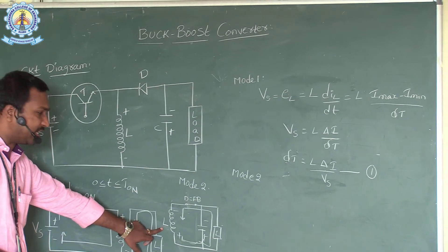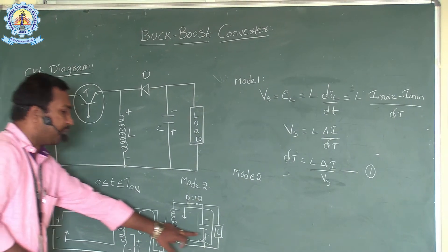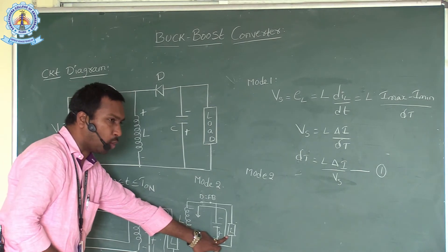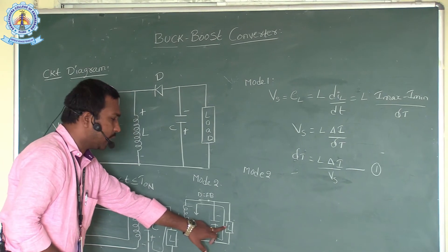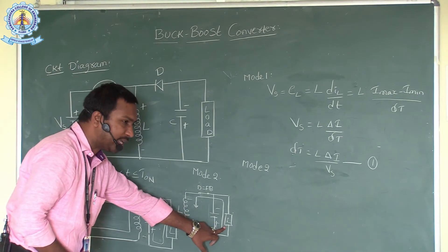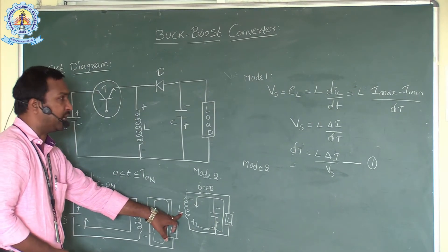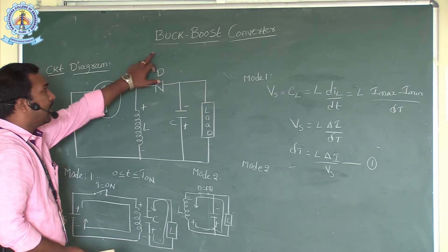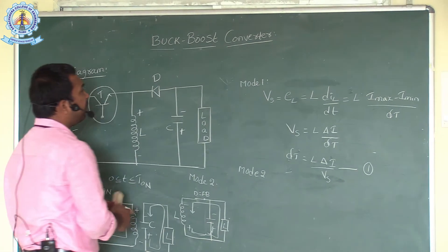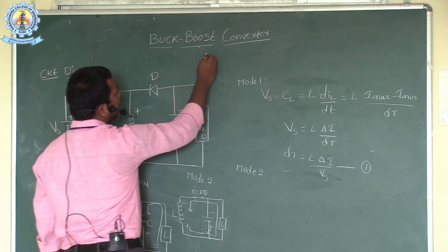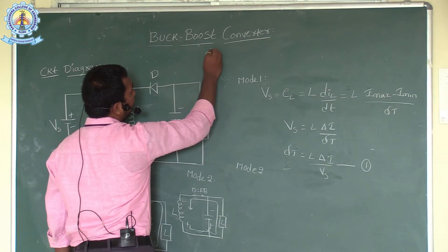For mode two of operation, the inductor acts as a source. When calculating the output voltage, the output voltage is opposite to the inductor voltage, because the other name for the buck boost converter is the inverting regulator.